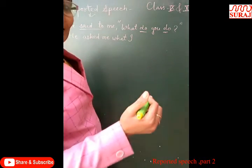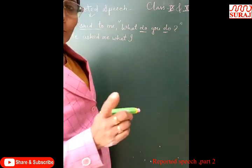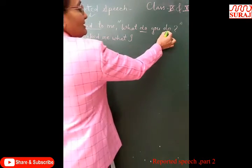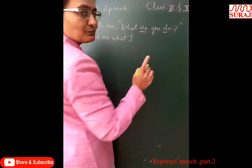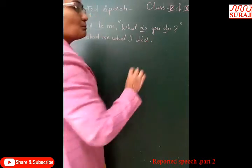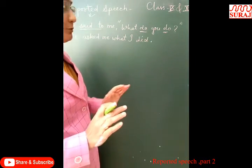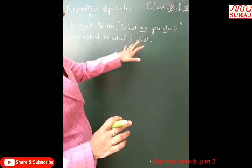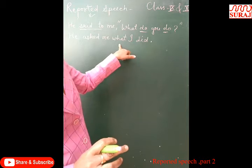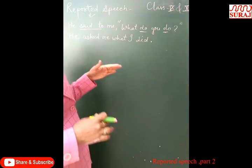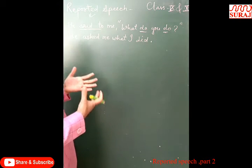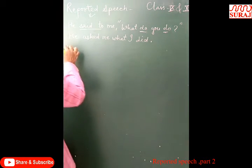The structure of past indefinite is: Subject + V2 + Object. V2 is always used in past indefinite. So the second form of 'do' is 'did,' giving us 'what I did.' The commas and inverted commas are removed. Direct speech: 'He said to me, "What do you do?"' → Indirect speech: 'He asked me what I did.' Now similarly we can change all such sentences.